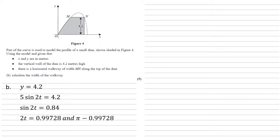Inverse sine of that, 2t is equal to 0.99728. That's the one that the calculator gives. Then also by the symmetry of the sine graph, we know that the next result is going to be pi minus 0.99728, which is 2.14431. Hence t is 0.49864 and 1.07216.